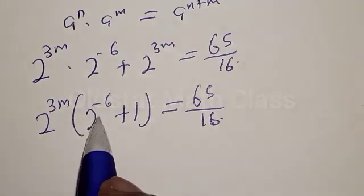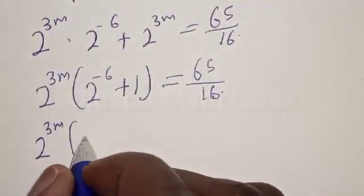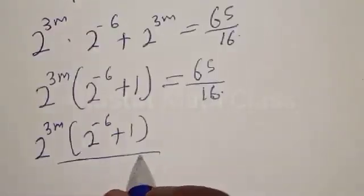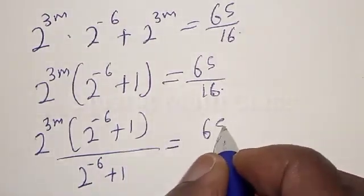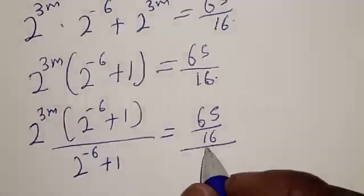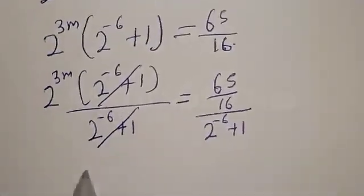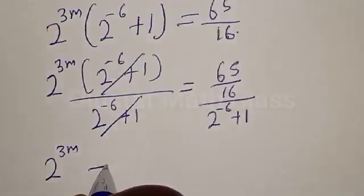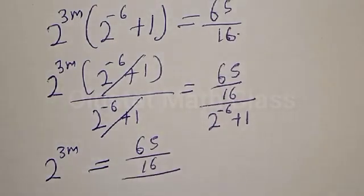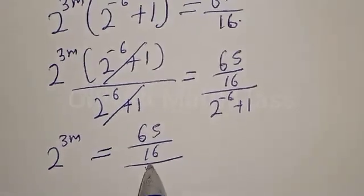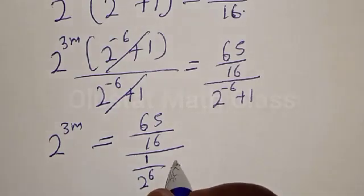Now let's divide both sides by the bracket term 2 raised to power minus 6 plus 1. Then we have 2 raised to power 3m is equal to 65 divided by (2 raised to power minus 6 plus 1), which can also be written as 65 divided by (2 raised to power minus 6 plus 1), equivalent to 65 divided by (1 over 2 raised to power 6 plus 1).